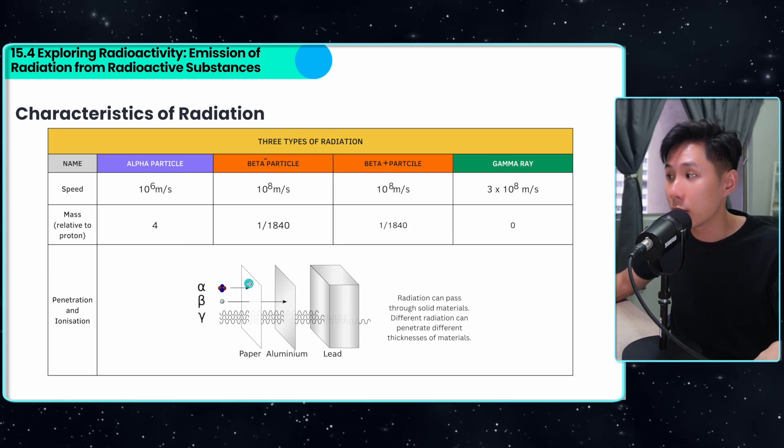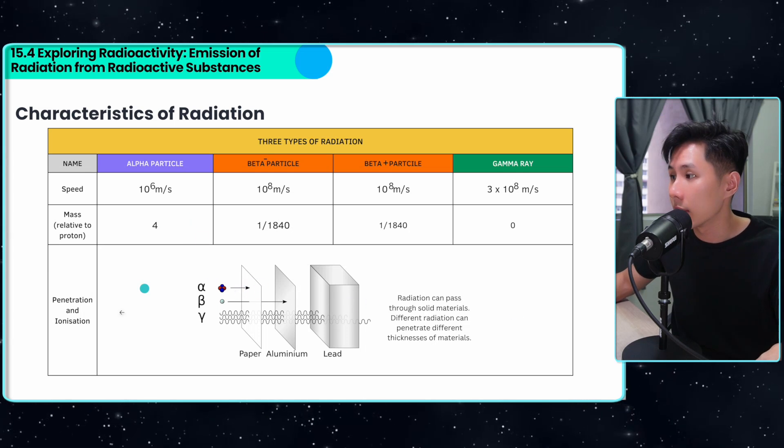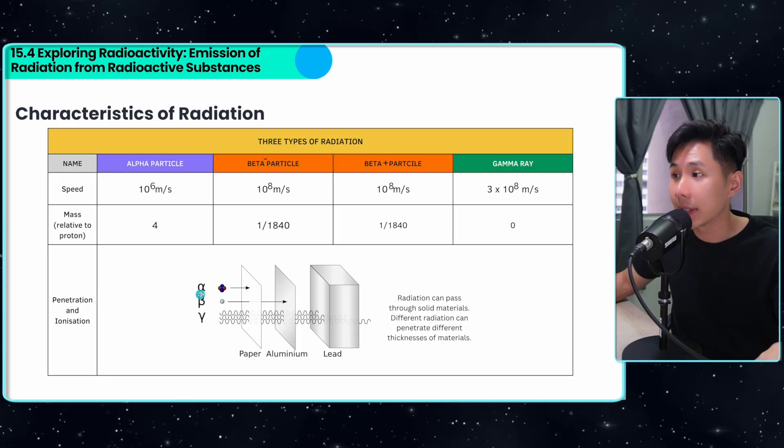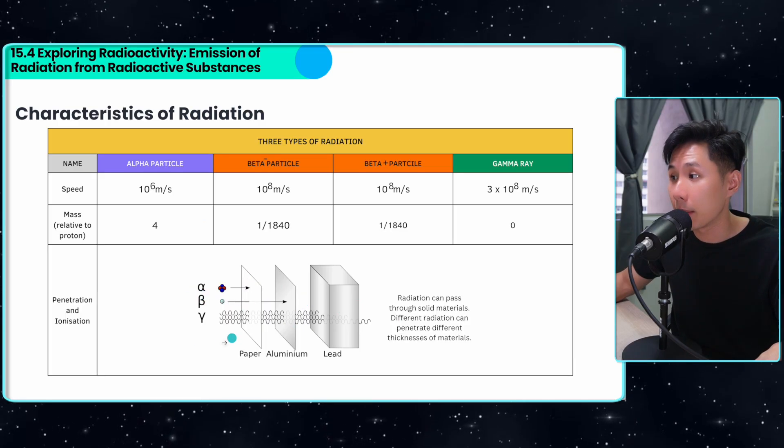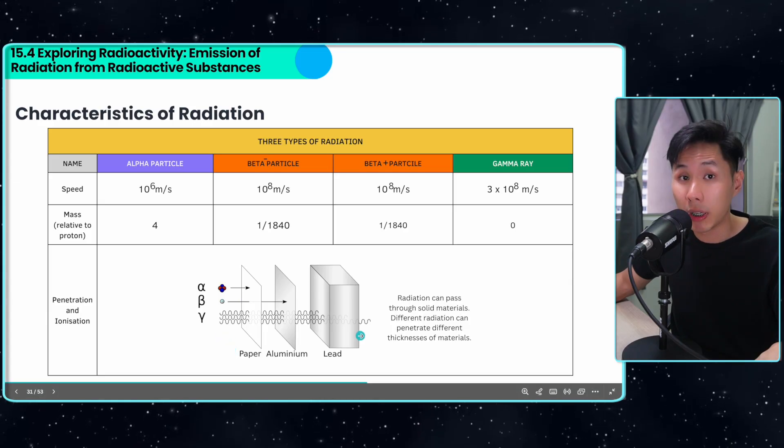And this is how they can penetrate through different materials. Just an illustration to show you that alpha particles have the least penetrating power, whereas gamma rays have the most penetrating power.